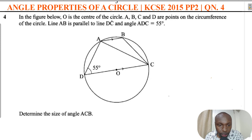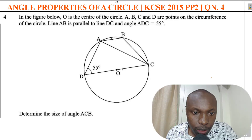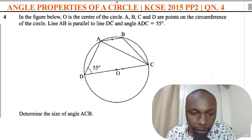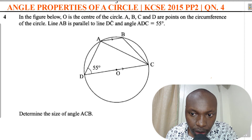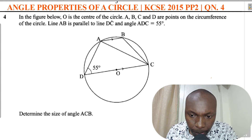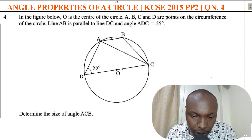Welcome to the lesson on angle properties of a circle. In the figure, O is the center of the circle. A, B, C, and D are points on the circumference. Line AB is parallel to line DC, and angle ADC equals 55 degrees.